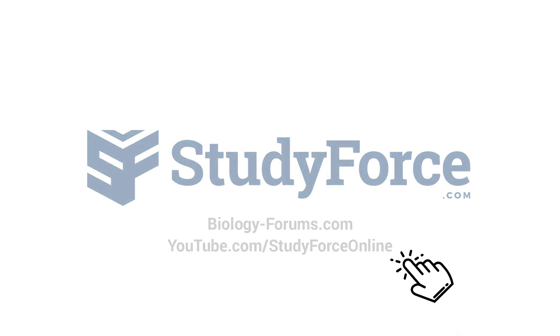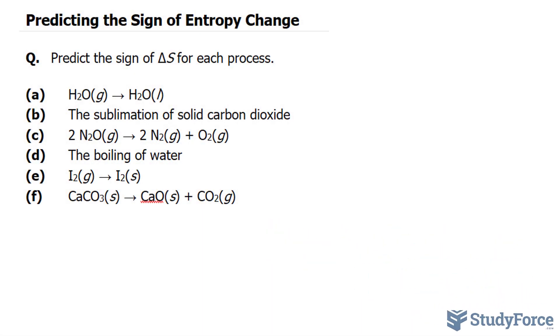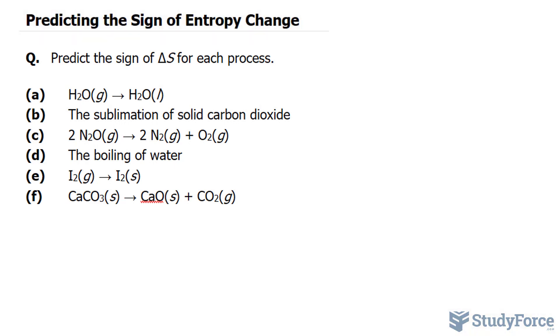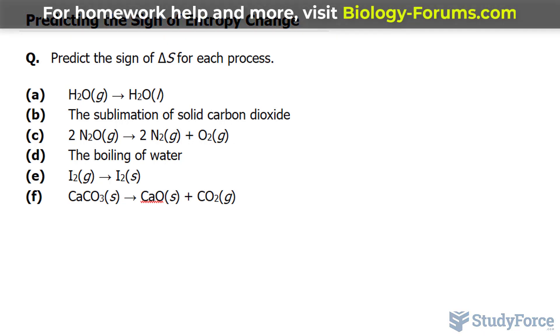In this lesson, I'll show you how to predict the sign of entropy change. The question reads: predict the sign of delta S for each process. Delta S represents entropy here and is generally the amount of disorder or molecular chaos in a system.